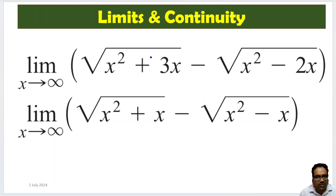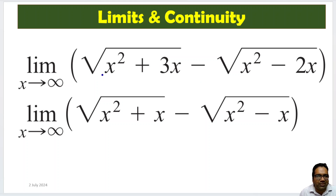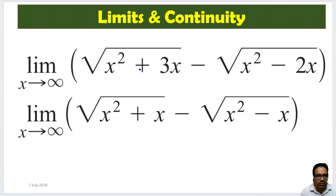Now, x squared plus 3x — obviously when x tends to infinity, this also will become bigger and bigger, and here also it becomes bigger and bigger. Both are quadratic equations. They are facing upwards because the coefficient of x squared is 1. And both have roots at 0, because if you substitute 0, both are 0. x squared minus 2x and x squared plus 3x are both 0.